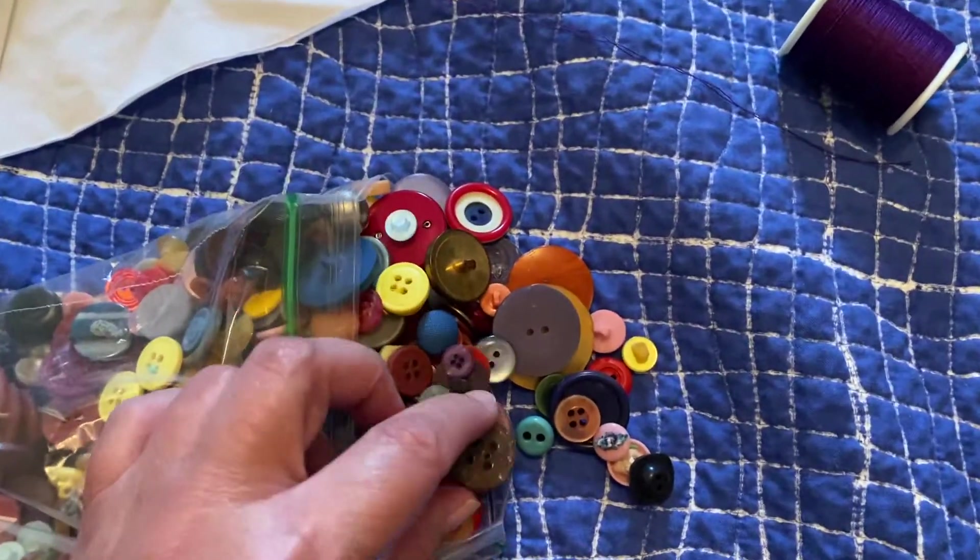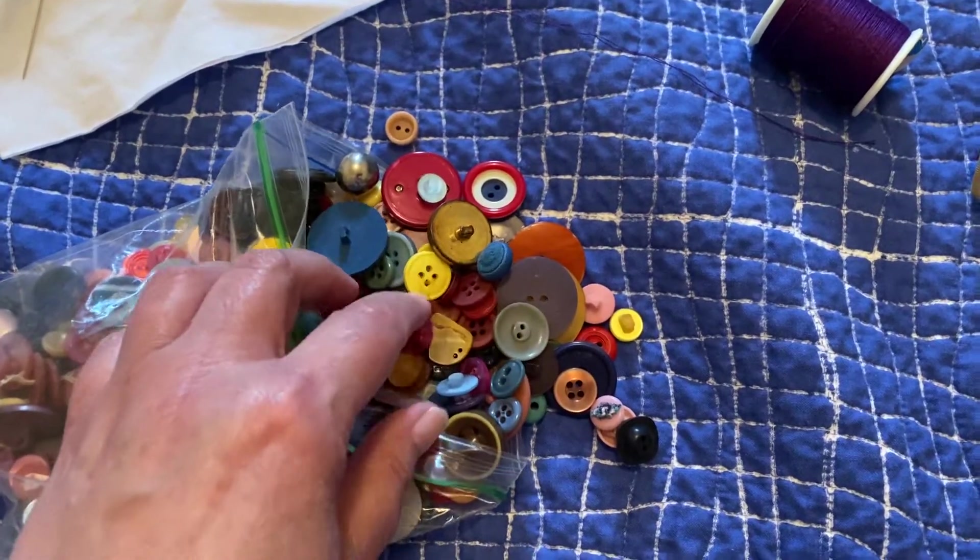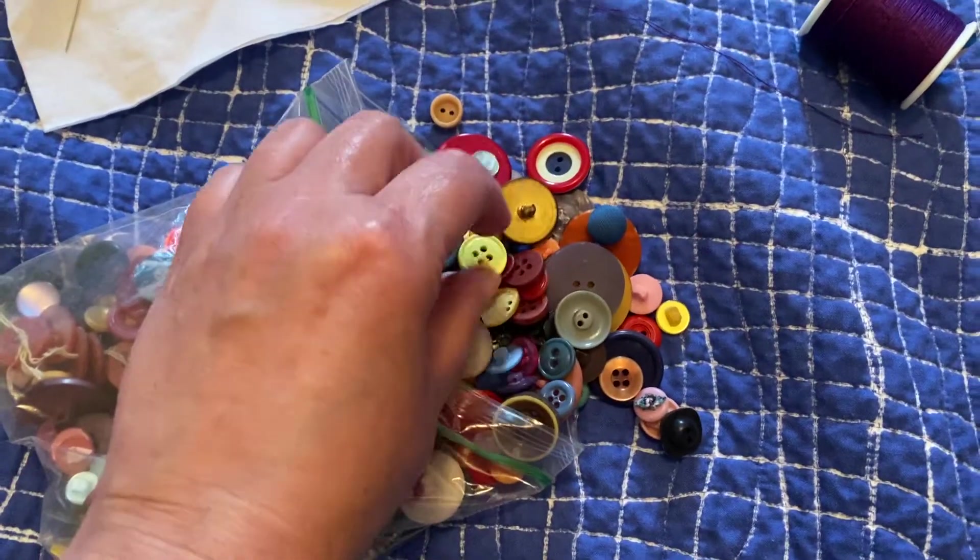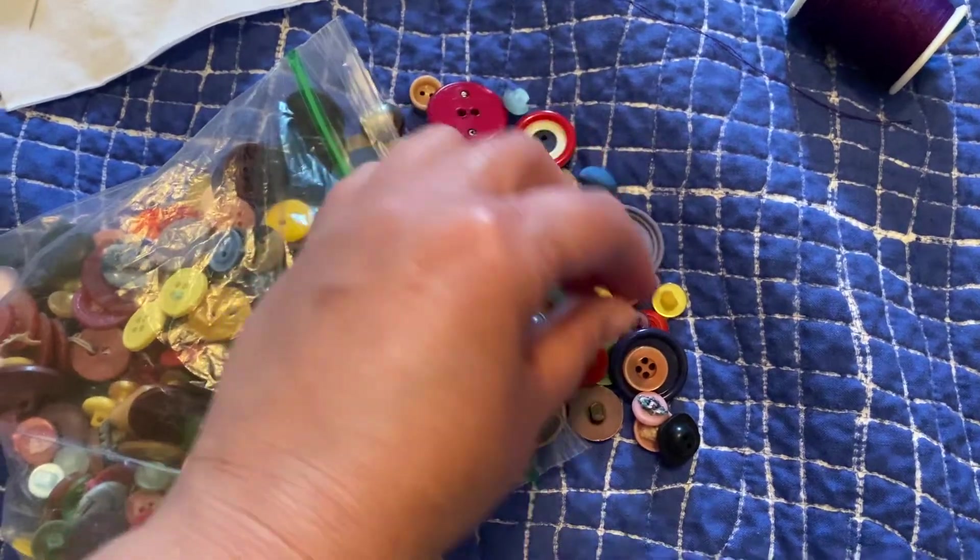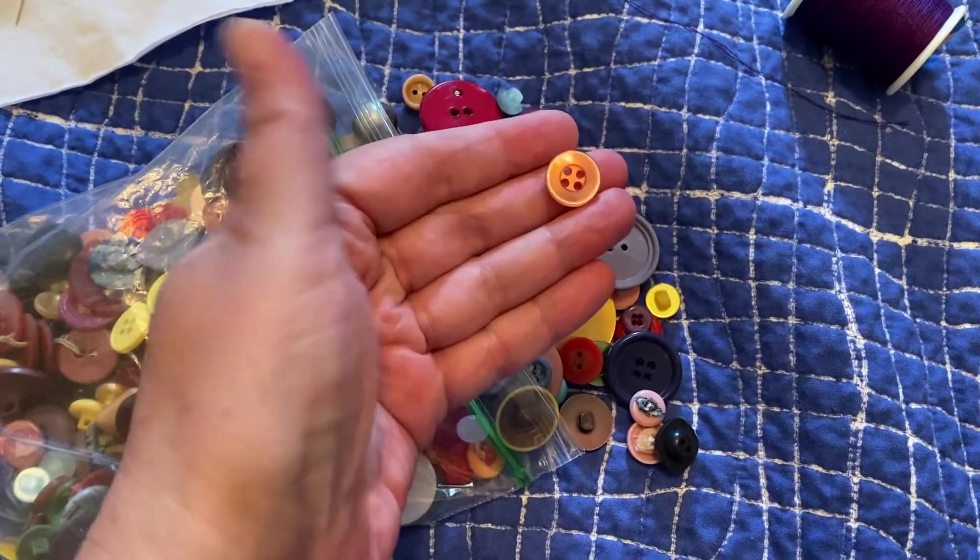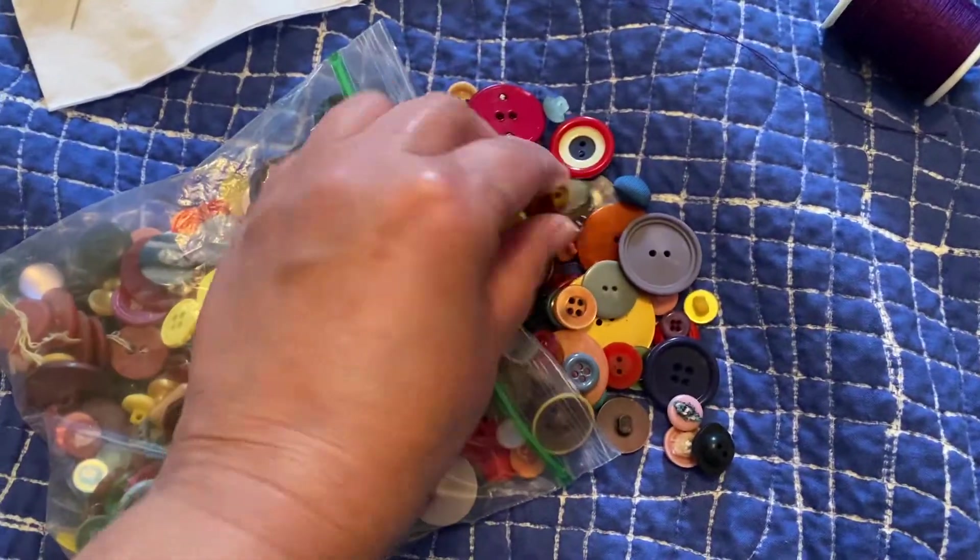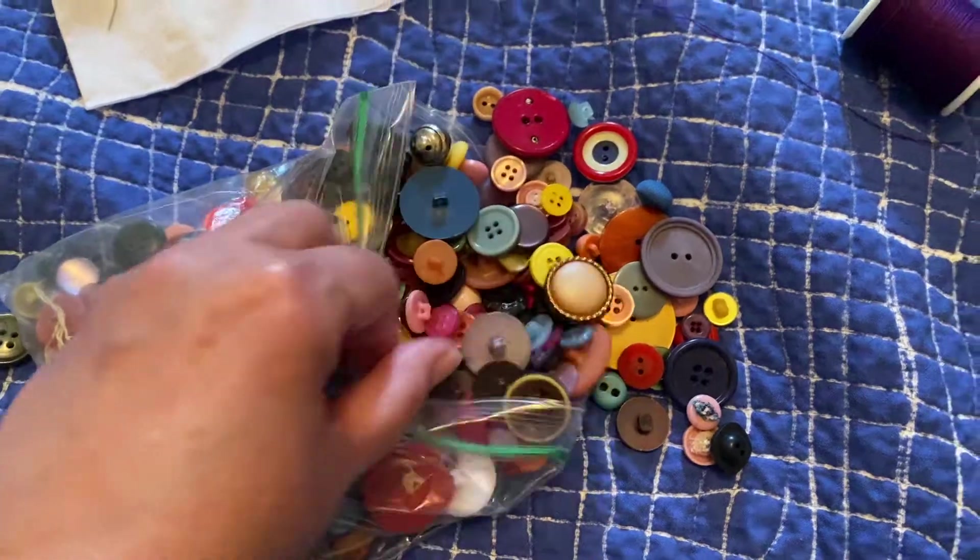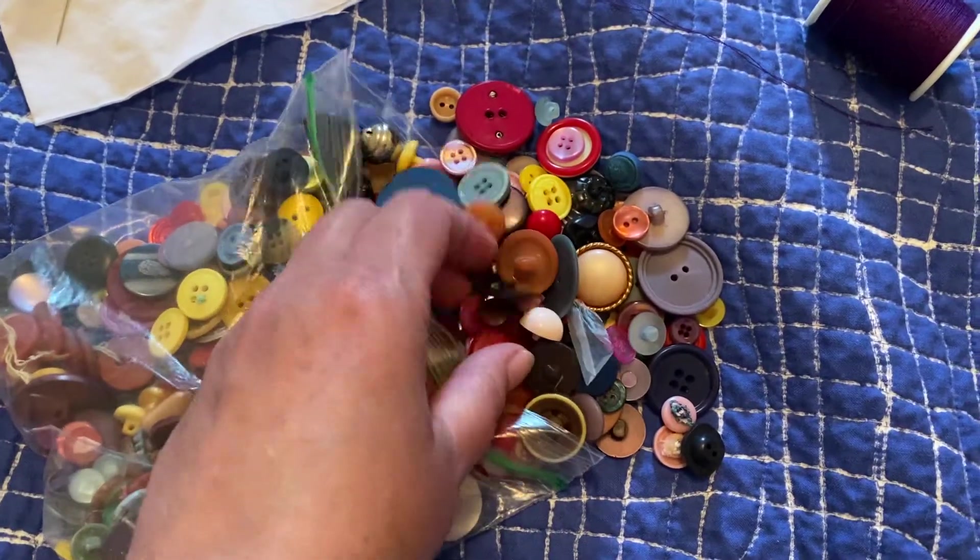There are a couple different kinds of buttons. Depending on what you're making or what you're repairing, there can be lots of different things. This button has two holes in it. There are quite a few buttons here that have four holes. Some of them are kind of decorative and weird. This one's pretty.